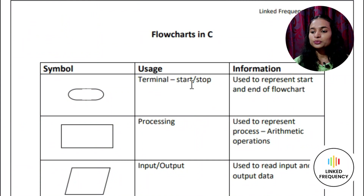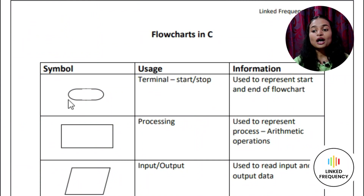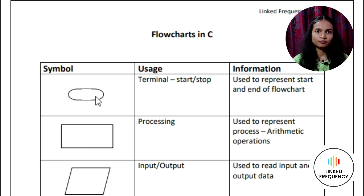We use flowcharts because they are helpful for both writing the program and explaining the program to others easily. Hence, programmers use it as a program planning tool to solve a problem. There are a few symbols specifically used in flowcharts. Let's understand those symbols. The first one is start and stop — the rounded rectangular box represents the flowchart's starting and ending point. This is the first and last symbol used in a flowchart.